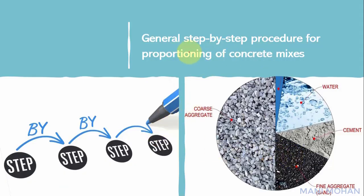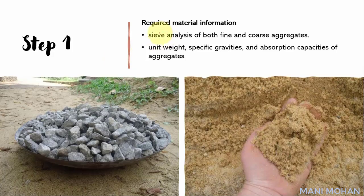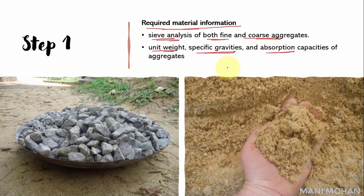The general step-by-step procedure for proportioning concrete mixes is as follows. Step 1: Required material information — determined by conducting tests on materials, including sieve analysis of fine and coarse aggregates, and determination of unit weight, specific gravities, and absorption capacities of aggregates. Step 2: Choice of workability — the degree of workability in terms of slump, compacting factor, or Vee-Bee time is selected as per job requirements.